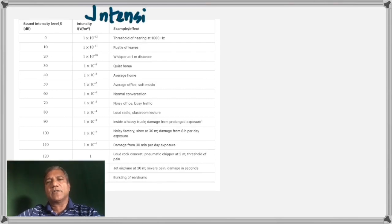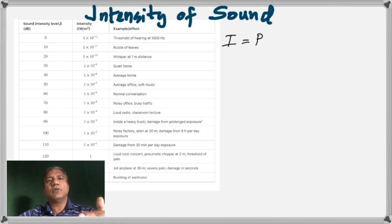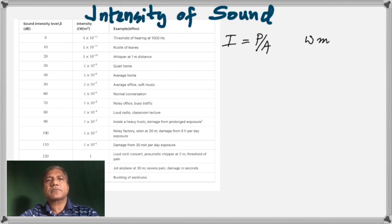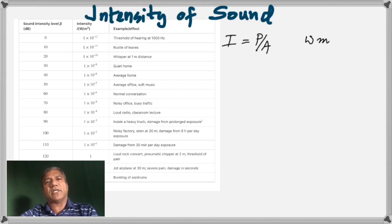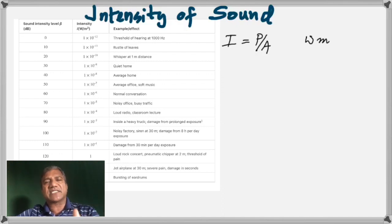Next is the intensity of sound. Intensity is defined as the power passing through one meter squared. The intensity of sound is the power of sound passing through one meter squared. Since power is energy over time, intensity is essentially energy passing per second per meter squared, which makes the unit watts per meter squared. Sound is usually measured in decibels, and we need to know how to convert between decibels and watts per meter squared.